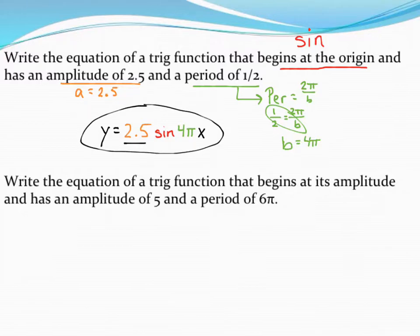It's got an amplitude of 2.5. It's a sine graph because it starts from the origin. And it's got a b value of 4 pi, which gets me a period of one-half. So there's my equation that fits this description.